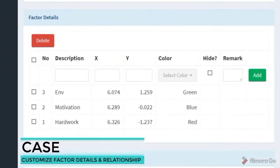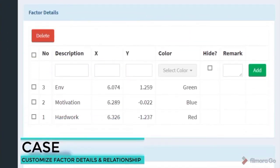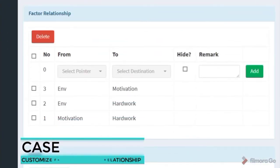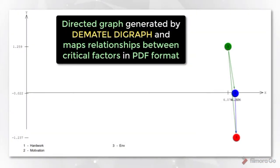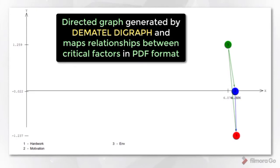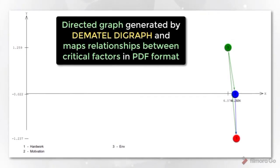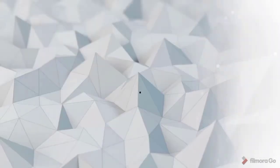In the case toggle form, the factor details and relationships can be customized. The directed graph is generated by Dematel Dygraph, and the relationships between critical factors will be mapped in PDF format.